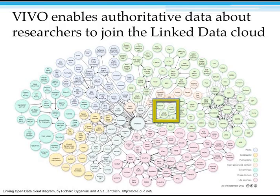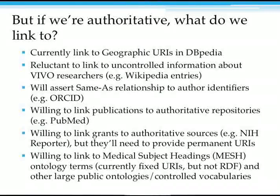As institutions implement VIVO and make it available, that information becomes public and accessible and can become part of the cloud. We made the latest release of the cloud diagram. If we are authoritative and part of the linked open data cloud, what is it that we link to? Right now it's a limited set. We have geographic information linking to DBpedia. We're a bit reluctant to link to uncontrolled information — we could link to Wikipedia entries about faculty, but we're reluctant given that we're providing authoritative data about people.